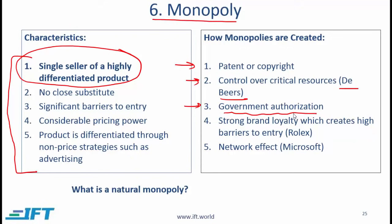The most common reason for a monopoly to exist is government authorization. A classic example would be that in a large city, a particular entity is the only organization authorized to provide electricity. A fourth possible reason is strong brand loyalty which creates high barriers to entry — a classic example would be Rolex, where people who buy Rolex watches believe they have something different and special with nothing else that compares or competes with Rolex in the eyes of Rolex customers.